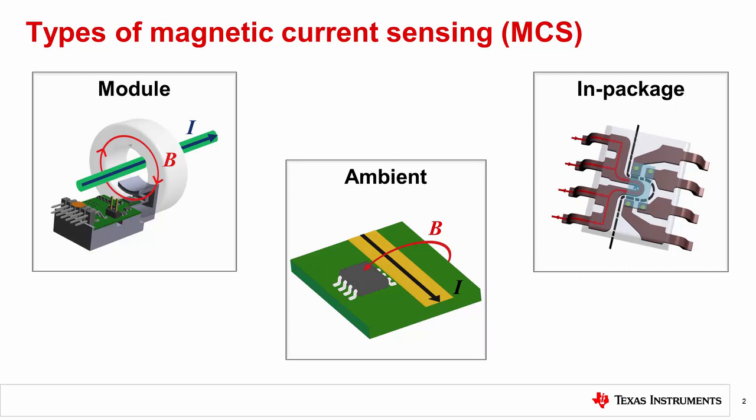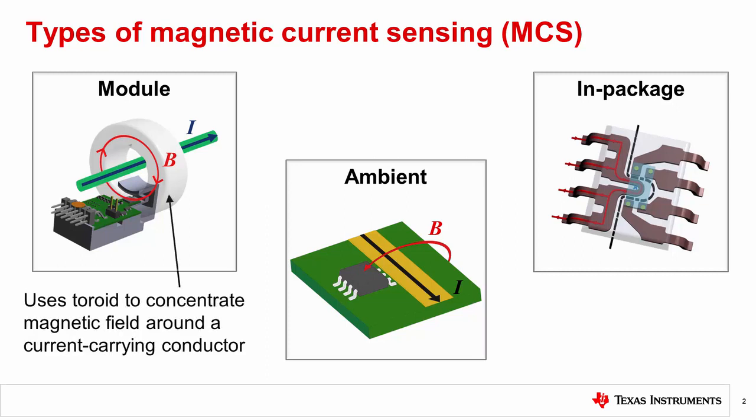Let's briefly review the different types of magnetic current sensing, or MCS. First, module-based sensing typically utilizes a magnetic toroid or other geometry to concentrate the magnetic field generated by the current carrying conductor. These systems are typically sold by a third-party manufacturer, as there is a high degree of magnetic design required.